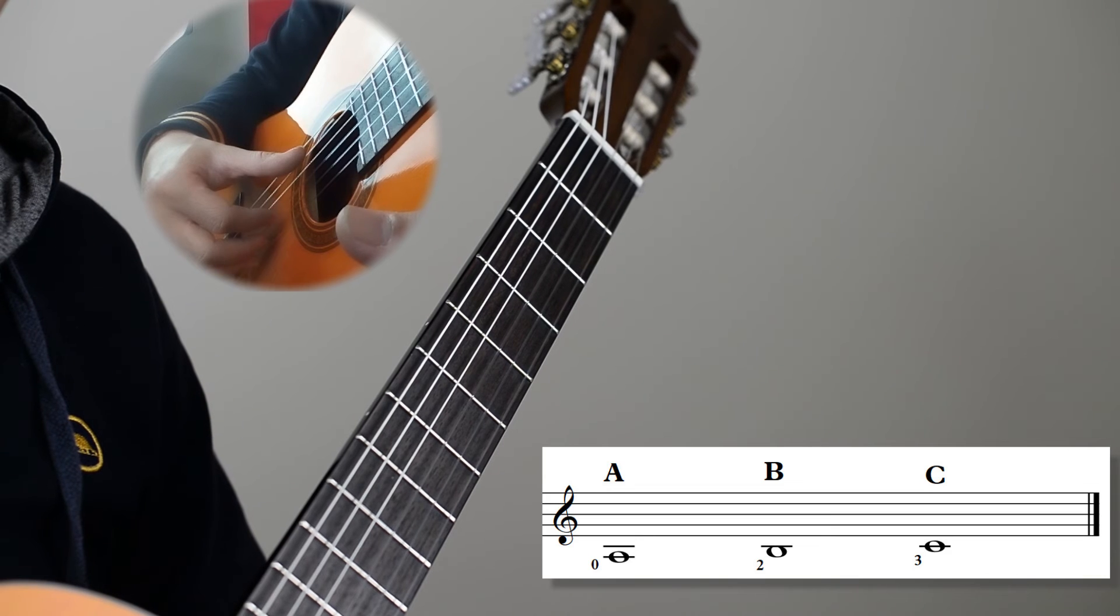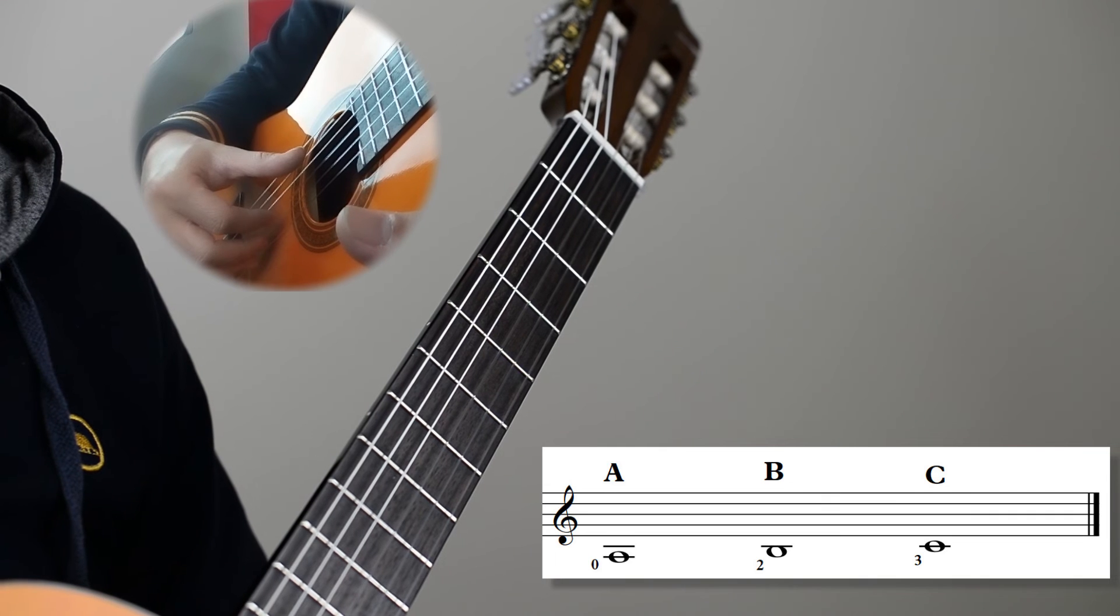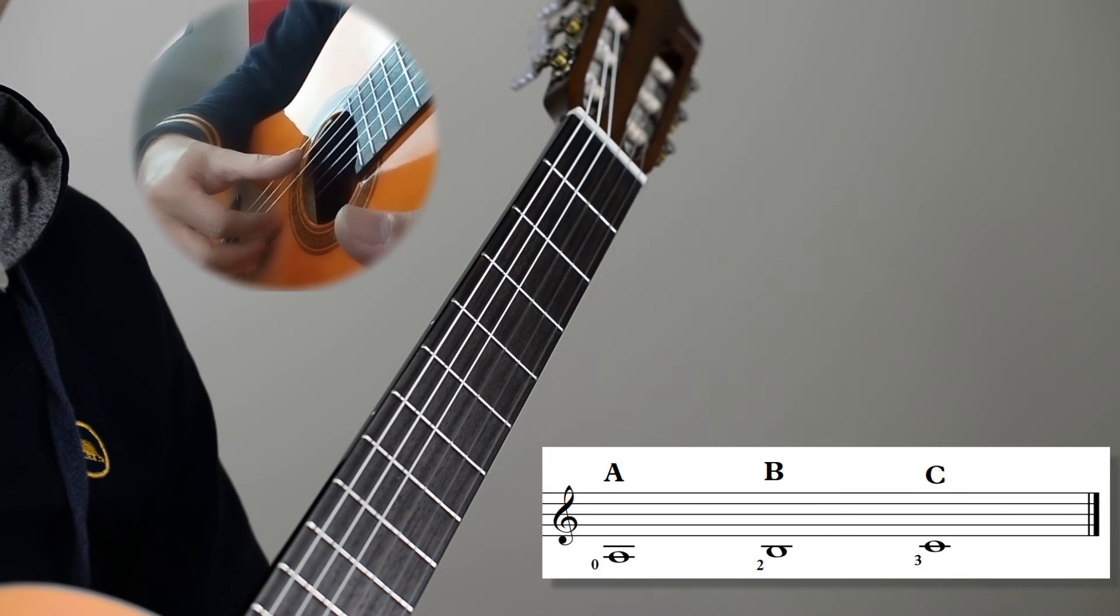So if you start from the A, it's a line, and then a space which is the B, and then a C which is on a line again.